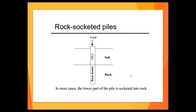Rock socketed pile. This one is straightforward — the pile will be socketed in the rock. If upon the ground surface you hit rock, in the first place you don't need more capacity. So this is only when we have a big overlay of deposit over the rock, that we need to socket into the rock.